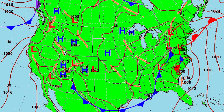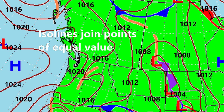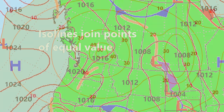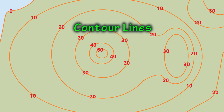Weather maps, also known as the synoptic chart, are an example of an isoline map. Isoline maps are made up of lines that join points of equal value. Contour lines drawn on a topographic map are another example of an isoline map.